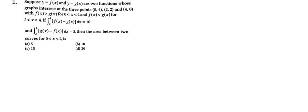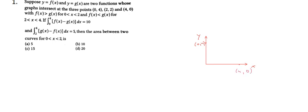Let us first draw our graph. Here we have the y-axis and x-axis, with points (0,4), (4,0), and (2,2). For 0 to 2, f(x) is greater than g(x), so let this be f(x) and this be g(x). For 2 to 4, f(x) is less than g(x). So we have two curves: this curve is f(x) and this curve is g(x).